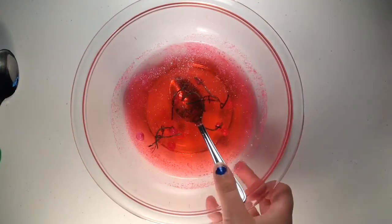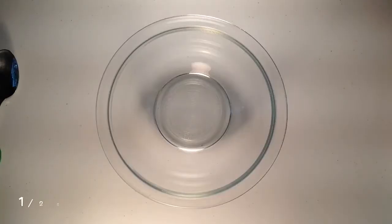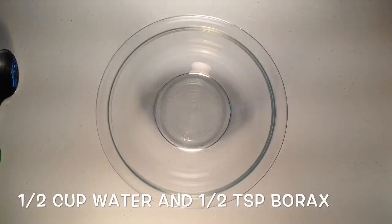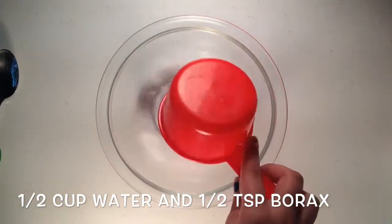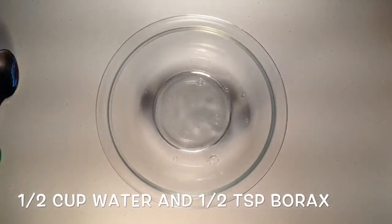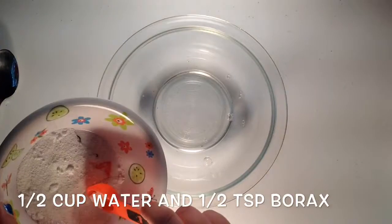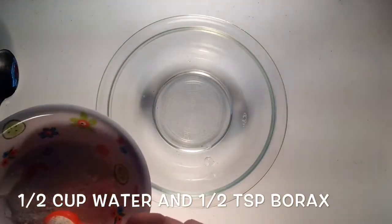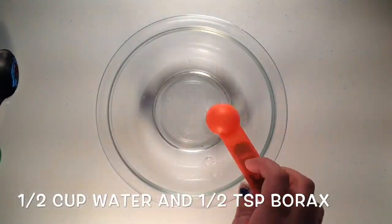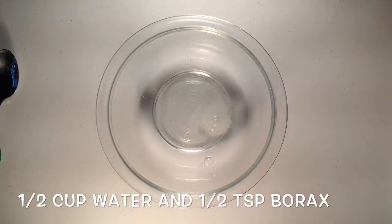Once you've got that mixed, you can just put that aside for now. In a separate bowl, you're going to take some warm water and a half a teaspoon of some borax. And you're going to mix that until it is dissolved.